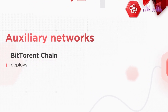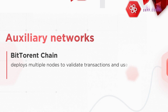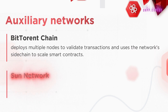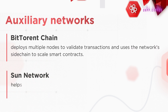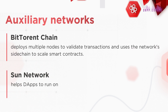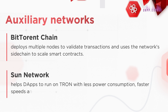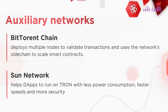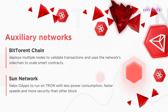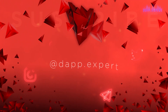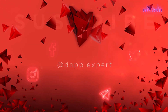BitTorrent Chain deploys multiple nodes to validate transactions and uses a network sidechain to scale smart contracts. Sun Networks helps applications run on Tron with less power consumption, faster speeds, and more security than other blockchains. Thank you for watching — subscribe to our social networks, all links in the description.